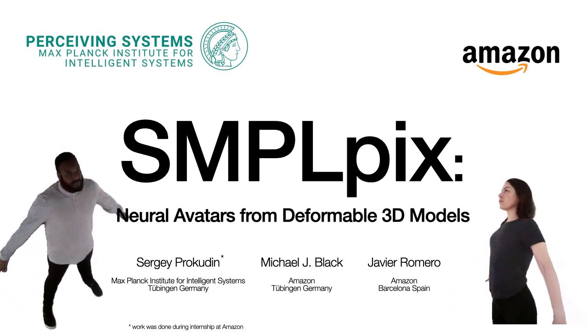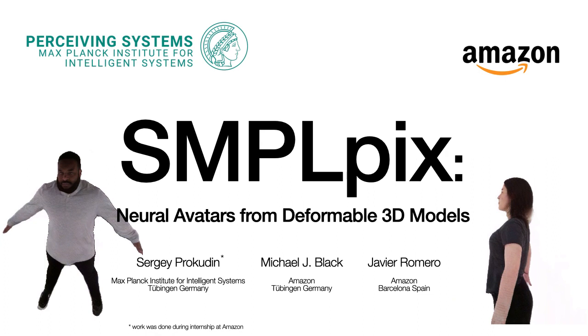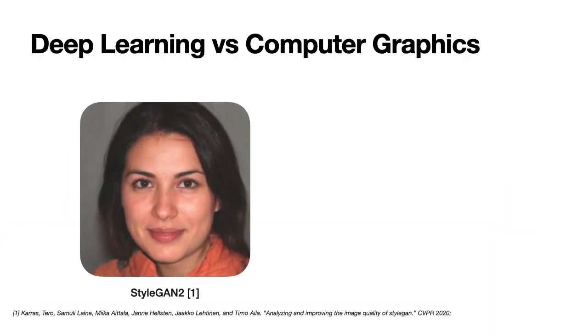Neural avatars from deformable 3D models. Nowadays, modern deep learning pipelines can generate human portraits that are indistinguishable from real photos. However, applications of such models are currently limited due to our inability to robustly control and combine generated scenes.